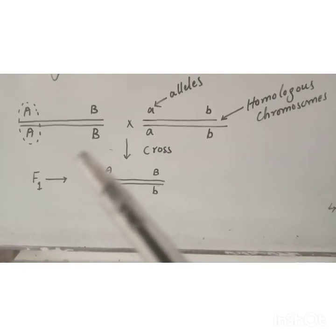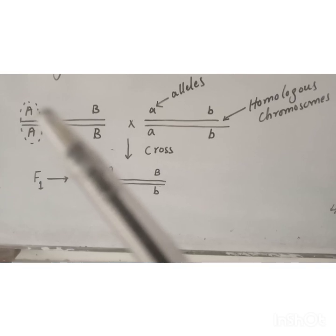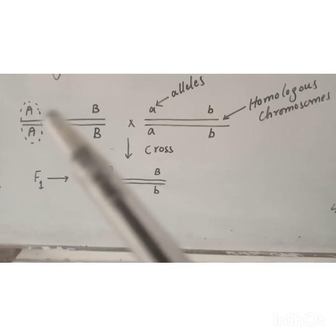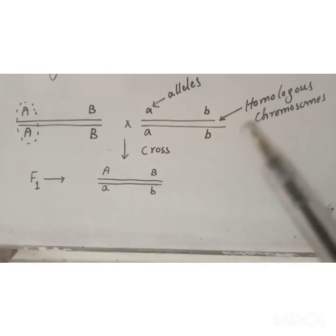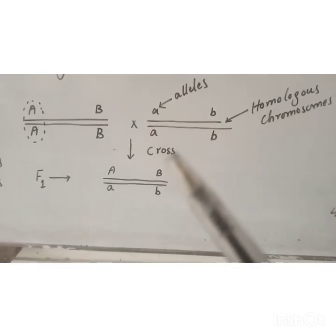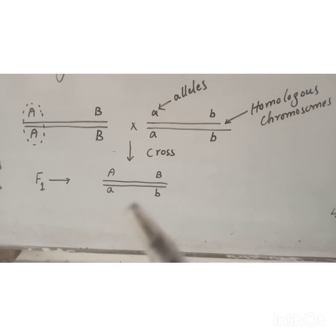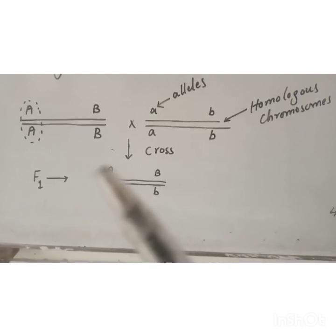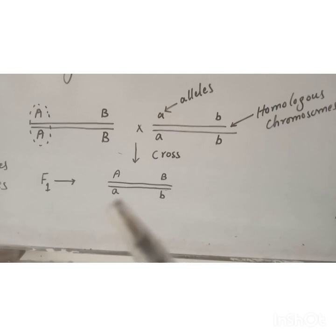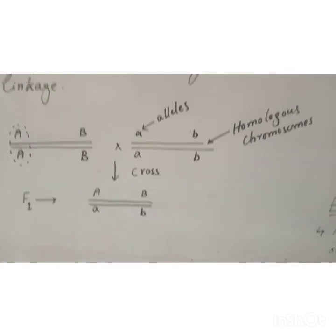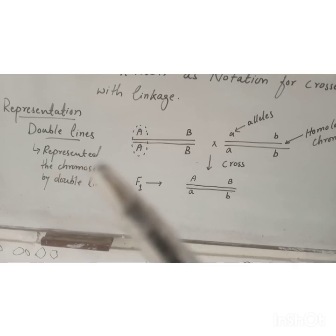We represent homologous chromosomes and their genes. We have one pair of homologous chromosomes. We represent the dominant side and the recessive side. After crossing and gamete formation, the F1 generation comes. This is the representation of linkage symbolism by double lines.